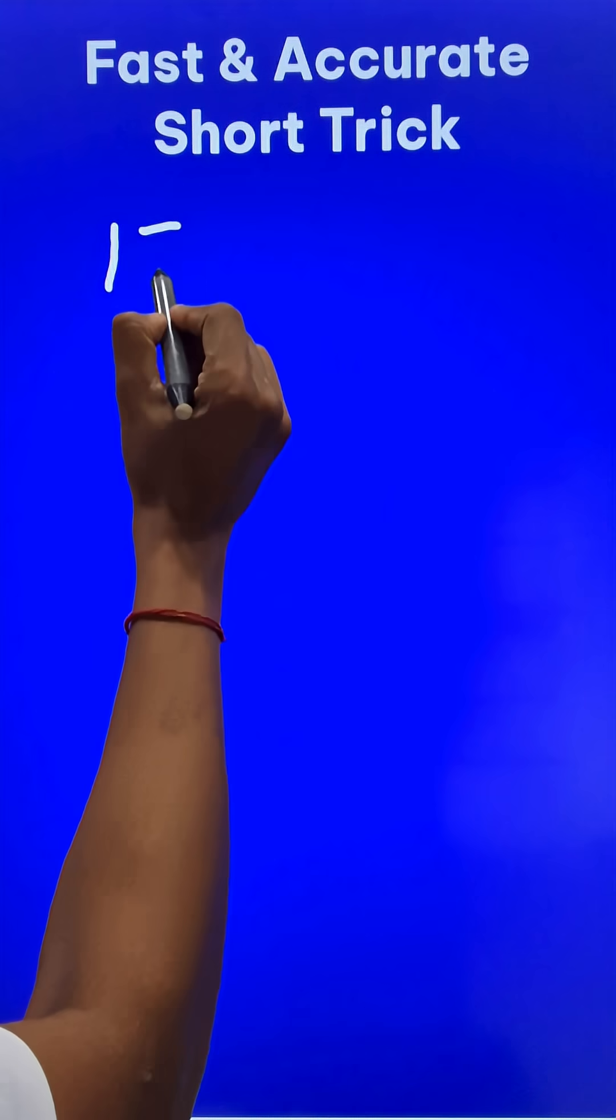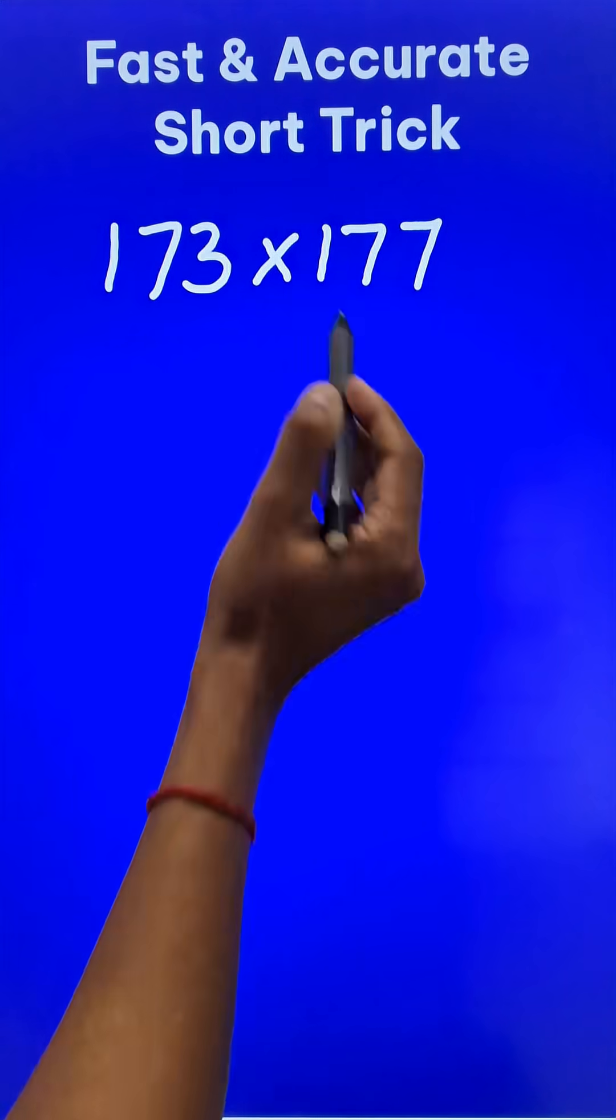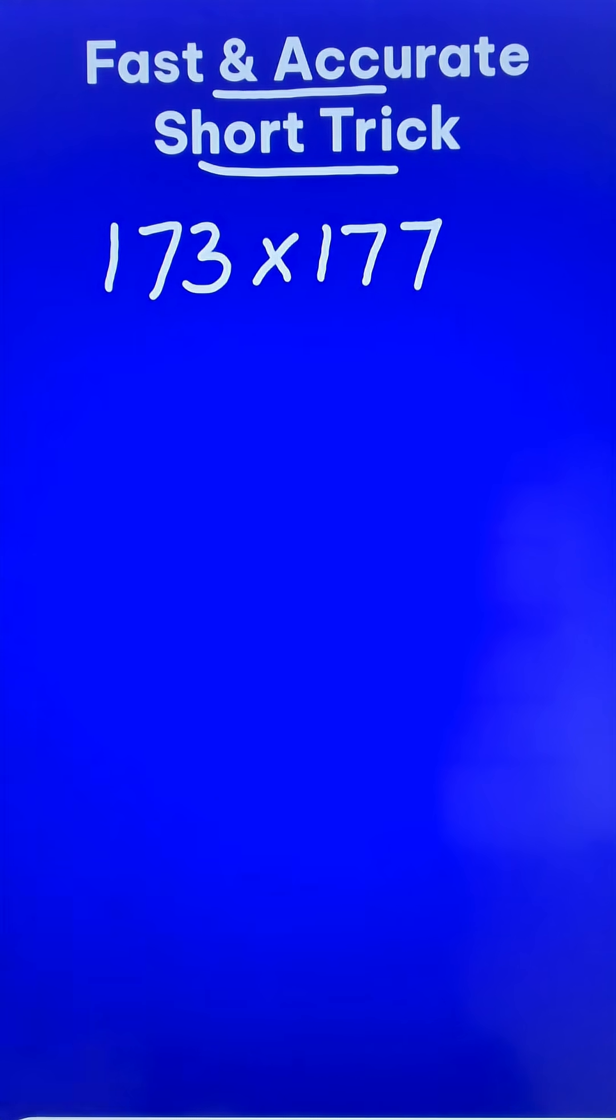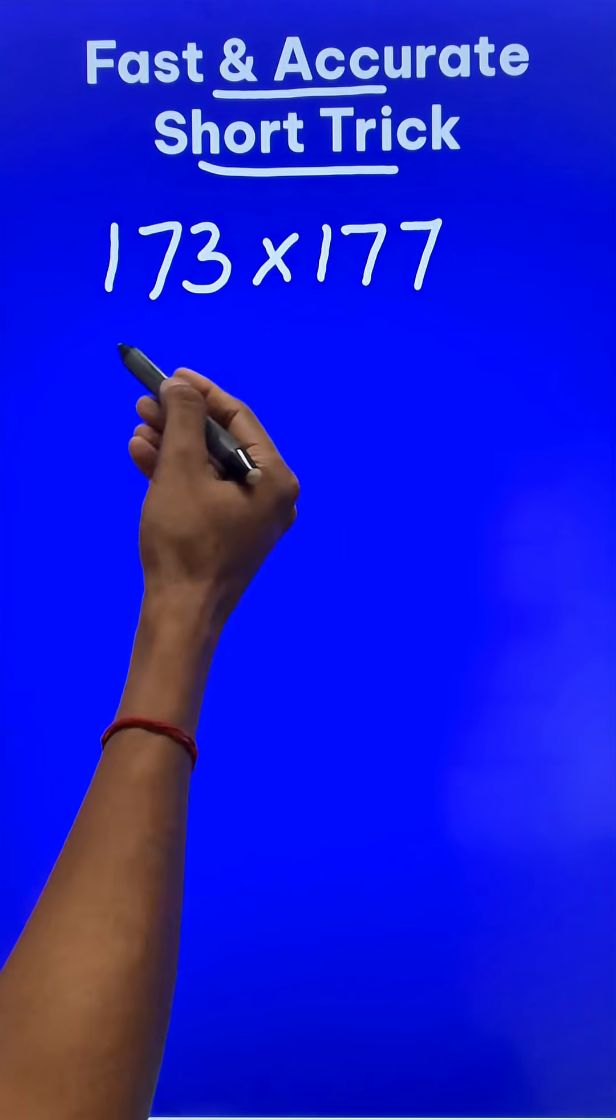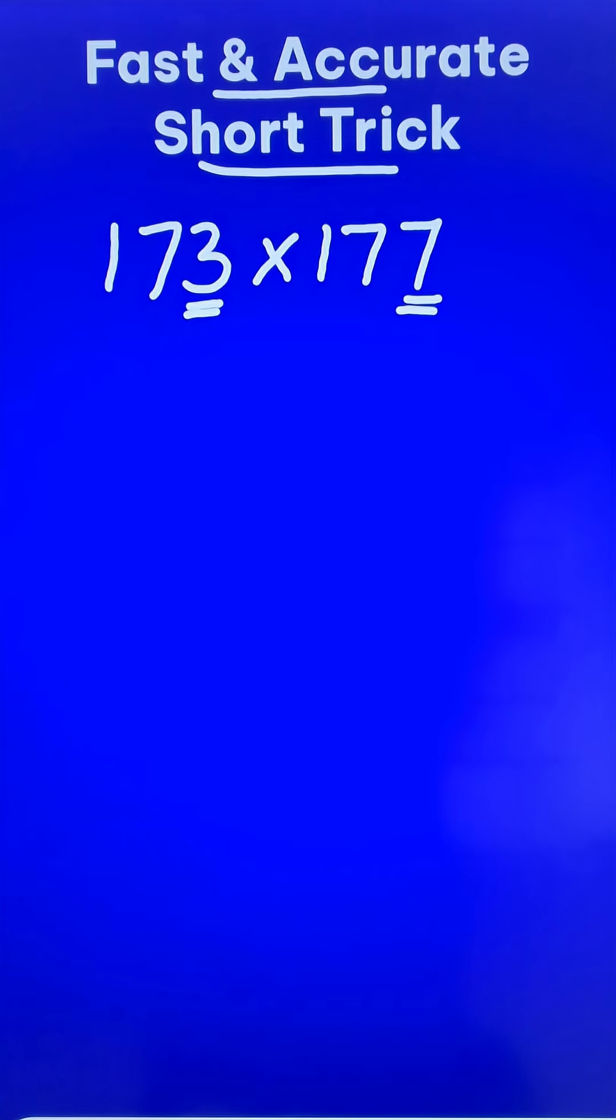Let us multiply 173 and 177 using this fast and accurate short trick. What is so special about these two numbers? If you see the unit digits 3 and 7, they add up to 10.